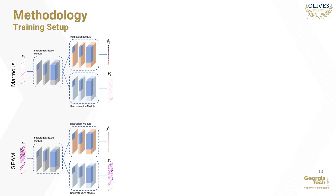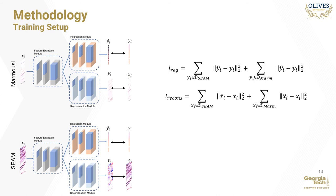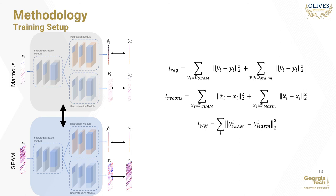We set up identical copies of the architecture for both Marmousi and SEAM datasets. At each iteration, each copy produces estimations for the well-logged and reconstructed seismic input for its respective dataset. The loss between estimated and ground truth well-logs for both SEAM and Marmousi are summed over all training samples to form the regression loss. Similarly, the loss between all reconstructed and ground truth seismic inputs is summed over all training samples in both datasets to obtain the reconstruction loss. Finally, the weight mismatch loss is obtained as the L2 norm squared difference of the weights in all corresponding network layers for both SEAM and Marmousi. The three losses are added together weighted by factors alpha, beta, and gamma respectively to obtain the total loss, which is then backpropagated to update the network weights.